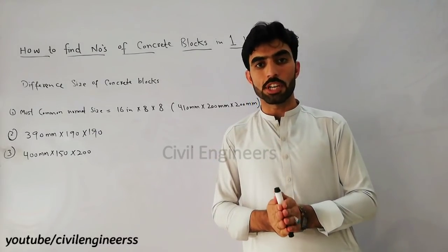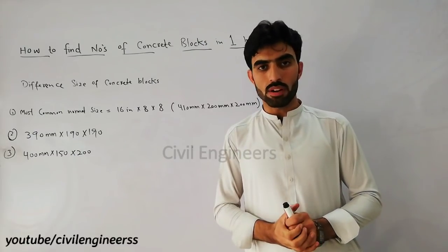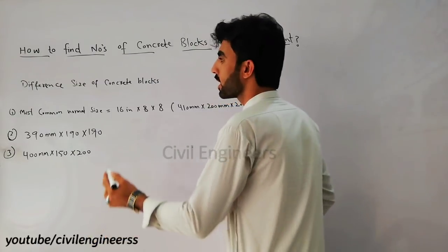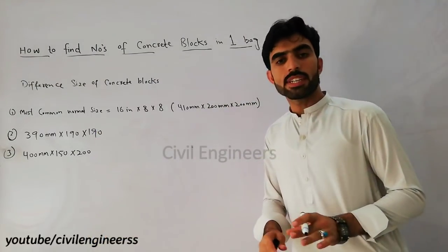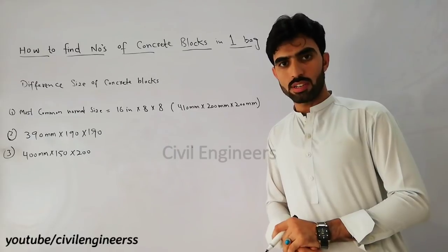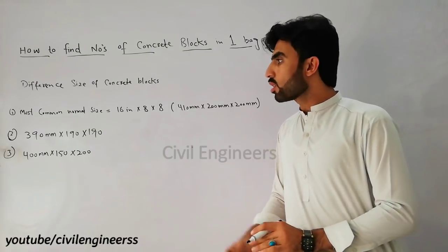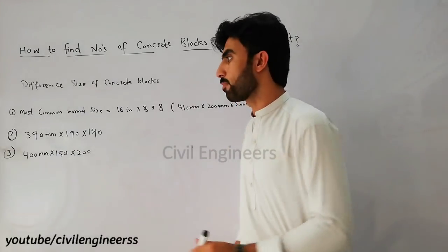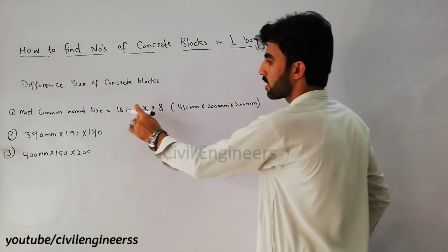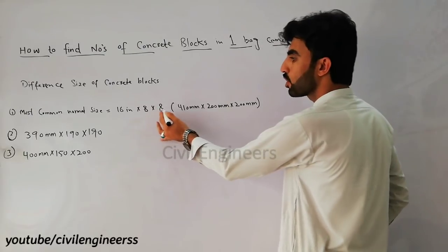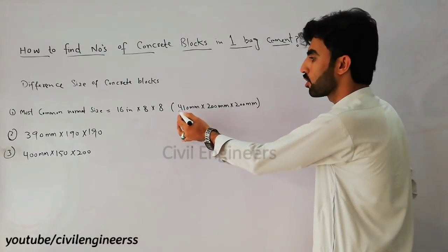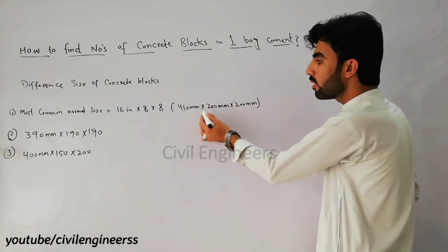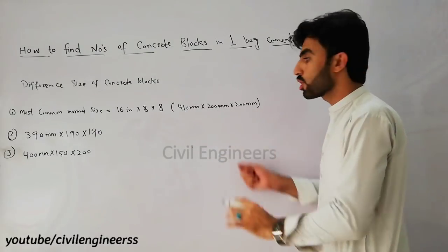Let's get started on how to find number of concrete blocks in one bag of cement. We know that we have different types of concrete blocks and their sizes. The first one is the most common normal size: 16 inch by 8 inch by 8 inch, which is in millimeters 410mm by 200mm by 200mm.